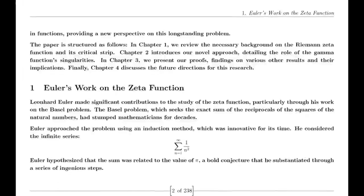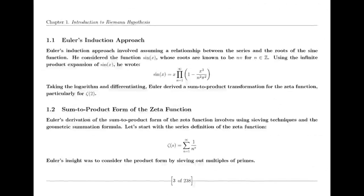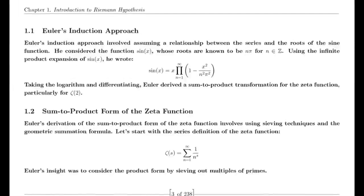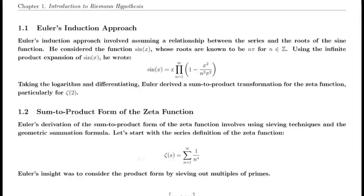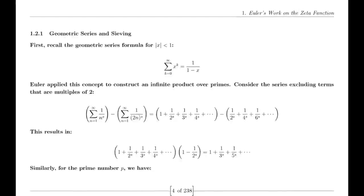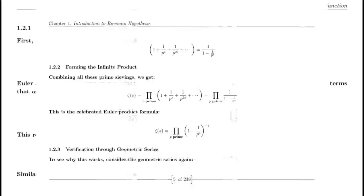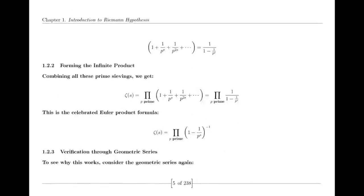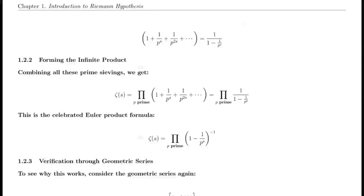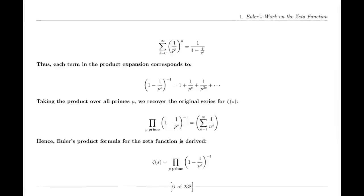One of Riemann's major discoveries was the reflection formula for the zeta function. This formula demonstrates a symmetry between the values of the zeta function at s and 1−s. Specifically, it shows that ζ(1−s) can be expressed in terms of ζ(s) using factors involving π, the gamma function, and trigonometric functions. This reflection formula is fundamental to the theory of the zeta function and provides deep insights into its structure.